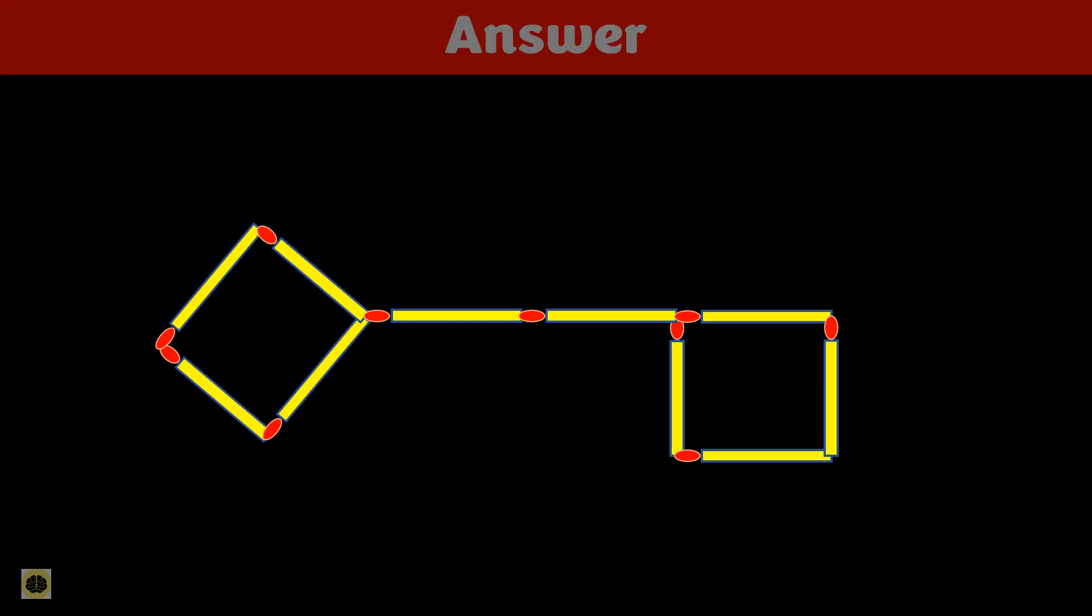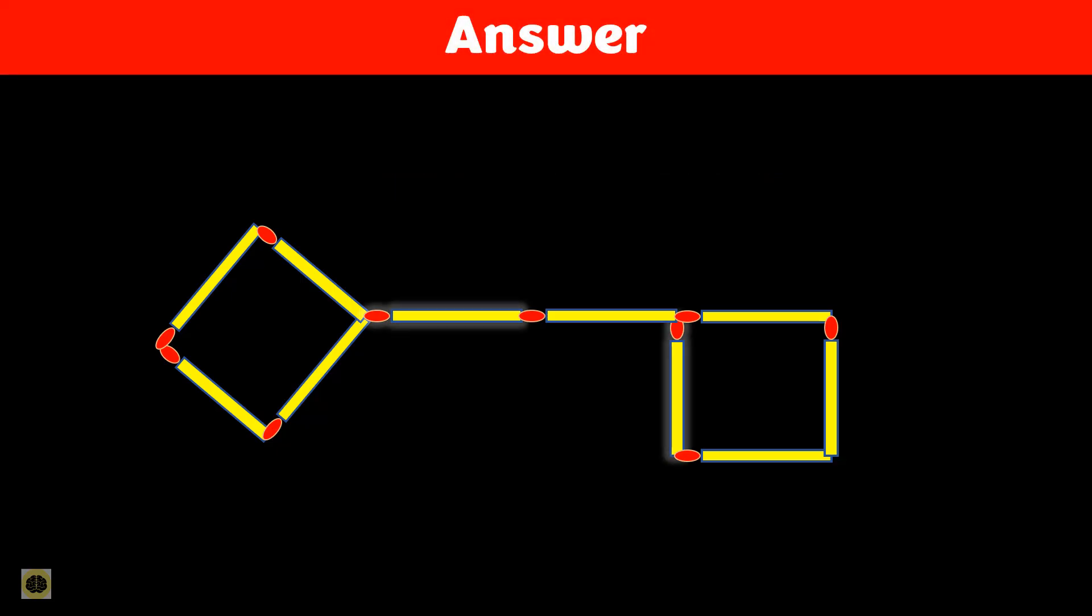Let's break down the answer step by step. Two sticks have been highlighted here, one vertical and one horizontal. These two sticks, when moved correctly, will create the entire second rectangle.